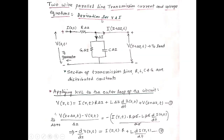Now the two-wire parallel line transmission current and voltage derivation will be done. Consider one section of the line. The input voltage is V(Z,T) from the generator, and the current at the input is I(Z,T). The circuit elements are R·ΔZ, conductance G·ΔZ, capacitance C·ΔZ, and the current at the end is I(Z+ΔZ, T). A small current flows through the parallel combination of G and C.